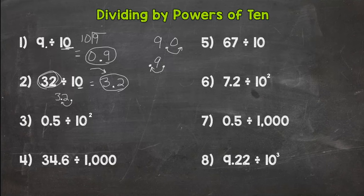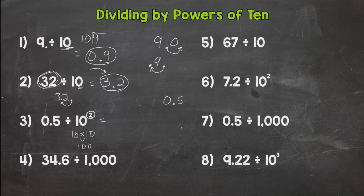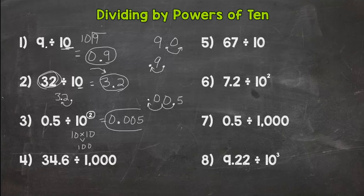In number 3, we have a power of 10 — 10 squared, or 100. It means 10 times 10, which equals 100. So we can look at this exponent, and that tells us how many times to move the decimal. We have to remember which way to move the decimal, though. So we have 5 tenths, and we are dividing this by 100. 5 tenths is less than a whole — we are taking something less than a whole and splitting it into 100 groups. So we're going to end up with a very small number. We move the decimal twice to the left and need a placeholder 0. So our answer is 5 thousandths.